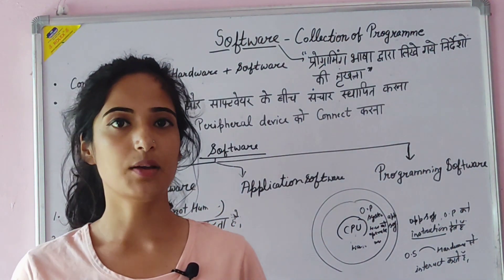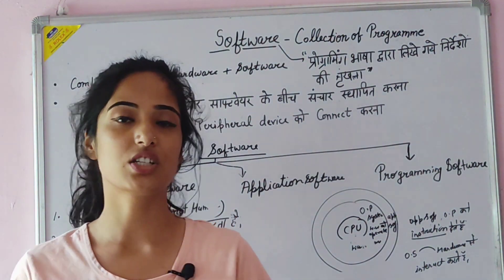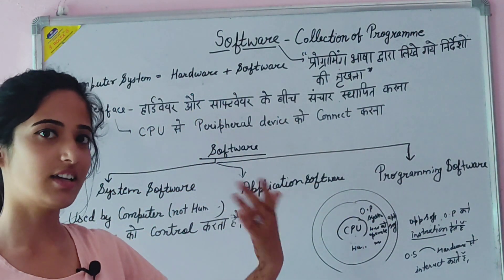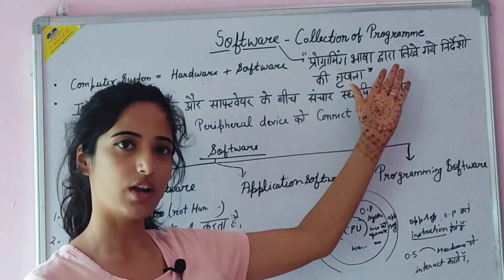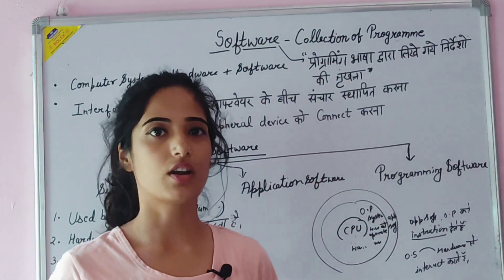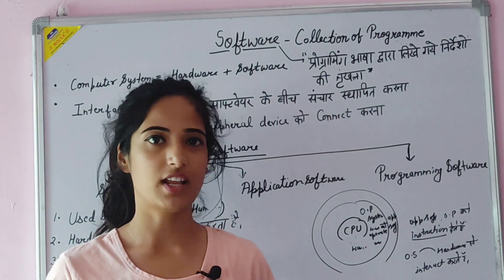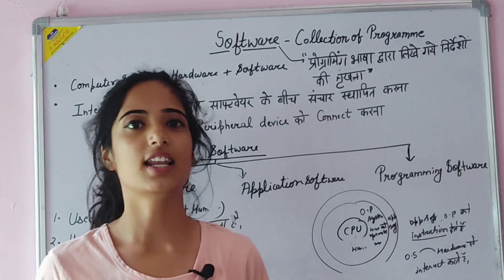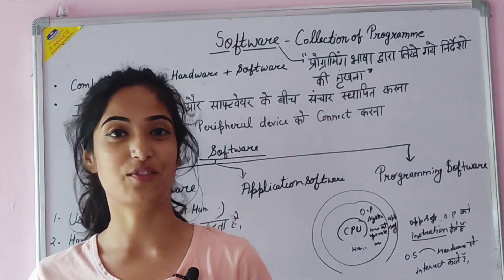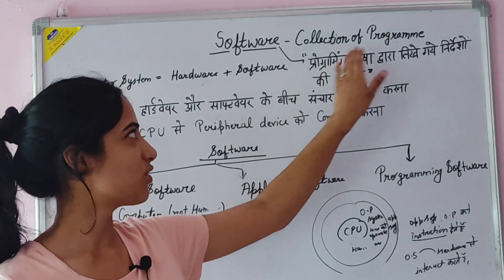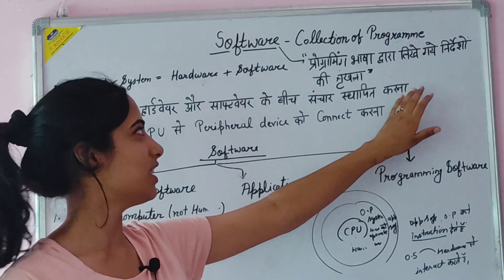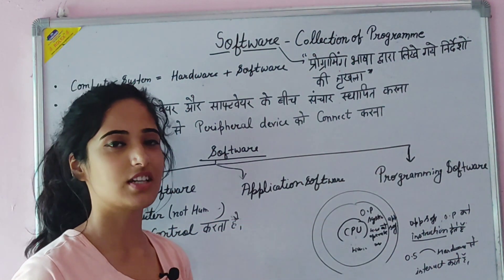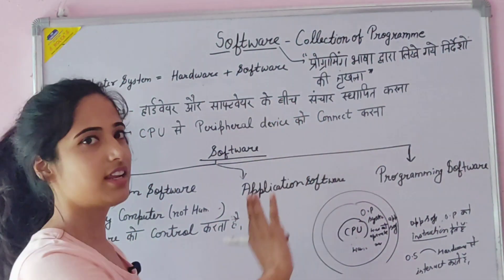Basically, we cannot read it directly. But there are instructions on which the computer works. So, the definition of software is: it is a collection of programs written by a programmer. Earlier they were written in low-level language — in 0s and 1s. Today they are written in high-level language. So there is a collection of programs. The software is written in a programming language — instructions are written in the programming language.